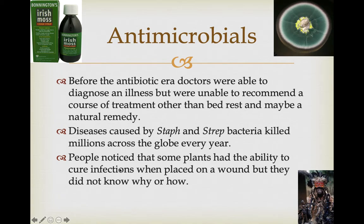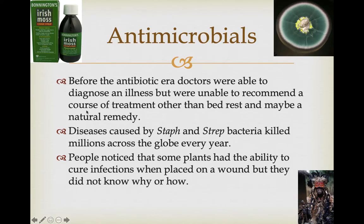About the best thing they had — and people had known this for a long time just by trial and error — is that different types of plants, like this iris moth's cough syrup, could be used. You could boil different plants or put leaves on wounds, and that would help cure or lessen the impact of an infection. They didn't really know why or how. People with this knowledge — witch doctors, voodoo healers, medicine men — knew which plants healed different things, though they didn't know it was killing bacteria.